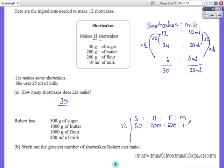10ml of milk. So we are going to work out for the ingredients we have now been given, which is 500g to 1000g to 1000g to 500g.